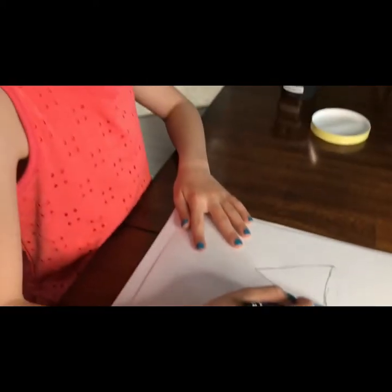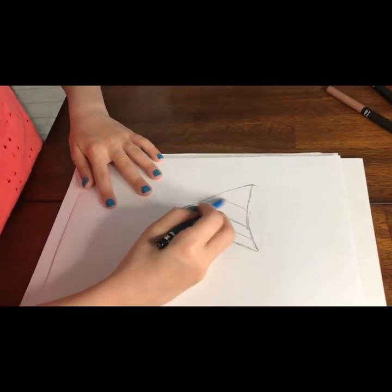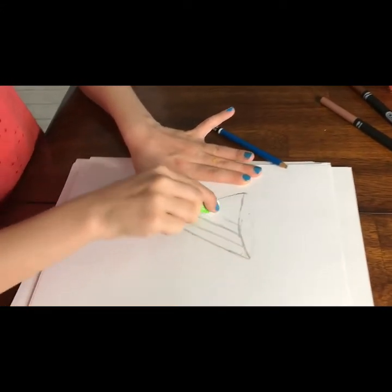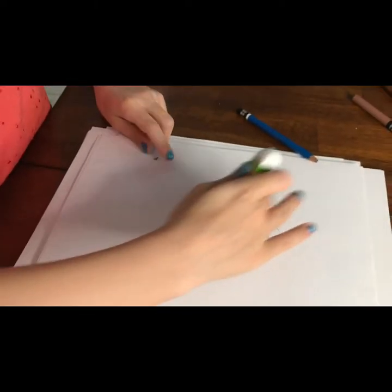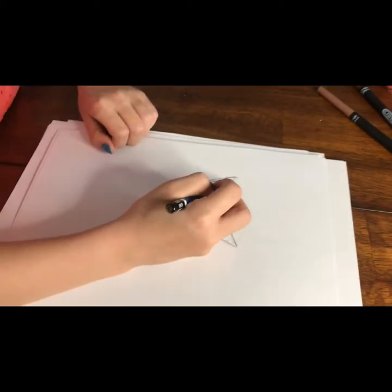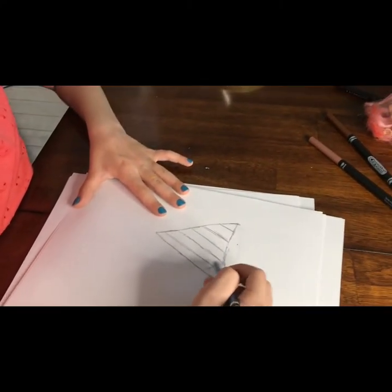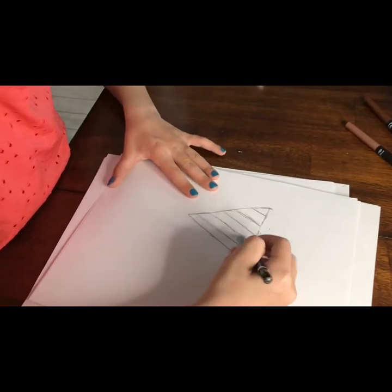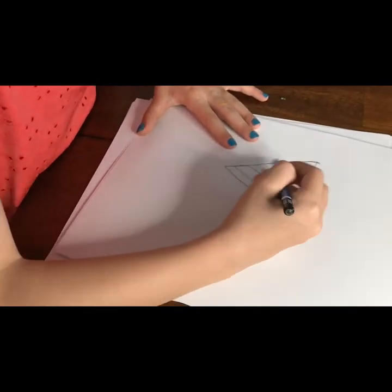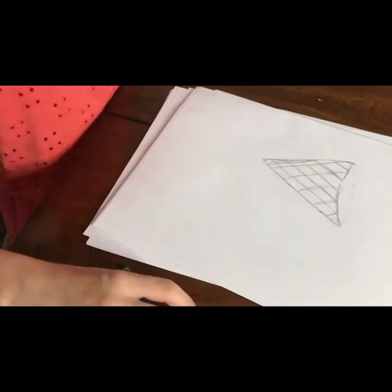That's step three, make the pattern. Kind of lightly just draw lines this way, then you draw them that way. If you've ever had cones before, I think you probably have, you can see there's always really like a pattern on the cone, only if it's a waffle cone.